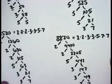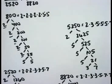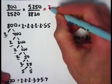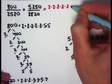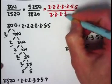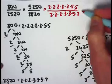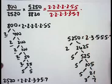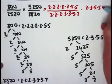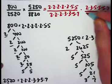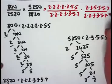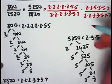Now we're ready to finish the problem. I'm going to write the prime factorizations of these numbers in. 800 is 2 · 2 · 2 · 2 · 2 · 5 · 5. 2520 is 2 · 2 · 2 · 3 · 3 · 5 · 7. 5250 is 2 · 3 · 5 · 5 · 5 · 5 · 7. And 8820 is 2 · 2 · 3 · 3 · 5 · 7 · 7.